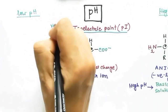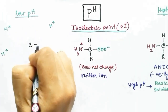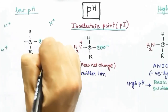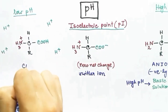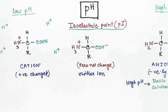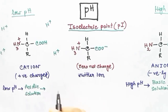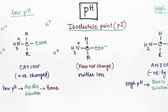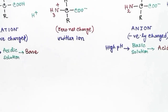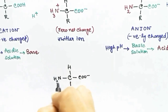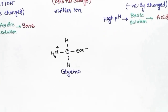In a low pH solution, the amount of H⁺ ion is high, so the COOH cannot release its H⁺, and the NH2 group picks up an H⁺ from the solution to become NH3⁺. The overall amino acid is positively charged and behaves like a base, as it can receive H⁺ ions. The amino acid can only exist as a zwitter ion at its specific isoelectric point.